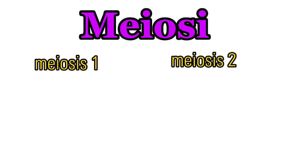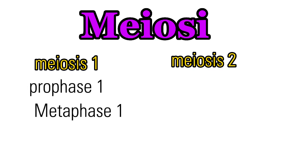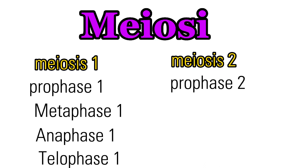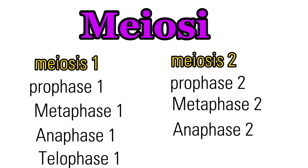Meiosis can be broken down into two steps called meiosis 1 and meiosis 2. The different stages of meiosis 1 are prophase 1, metaphase 1, anaphase 1, and telophase 1. While the different stages of meiosis 2 are prophase 2, metaphase 2, anaphase 2, and telophase 2.